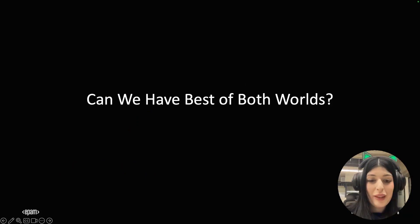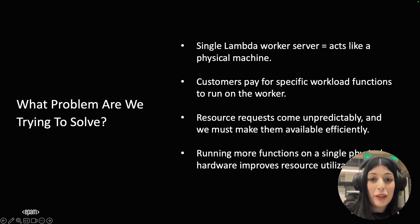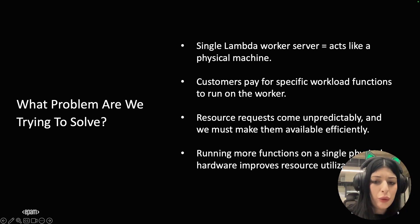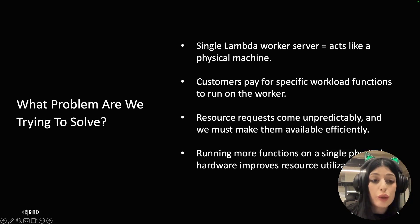So today we will be answering the question: can we have the best of both worlds? This is a problem that AWS tried to solve. Let's talk about Lambdas — think of a single Lambda worker server. It's like a physical machine that provides all the compute resources like CPU, memory, or other network resources. When a customer comes to AWS, they pay for specific workload functions to run on the worker. But the cloud provider doesn't have visibility into when clients will require resources or in what succession those requests will come in, yet they have no choice but to provide those resources.